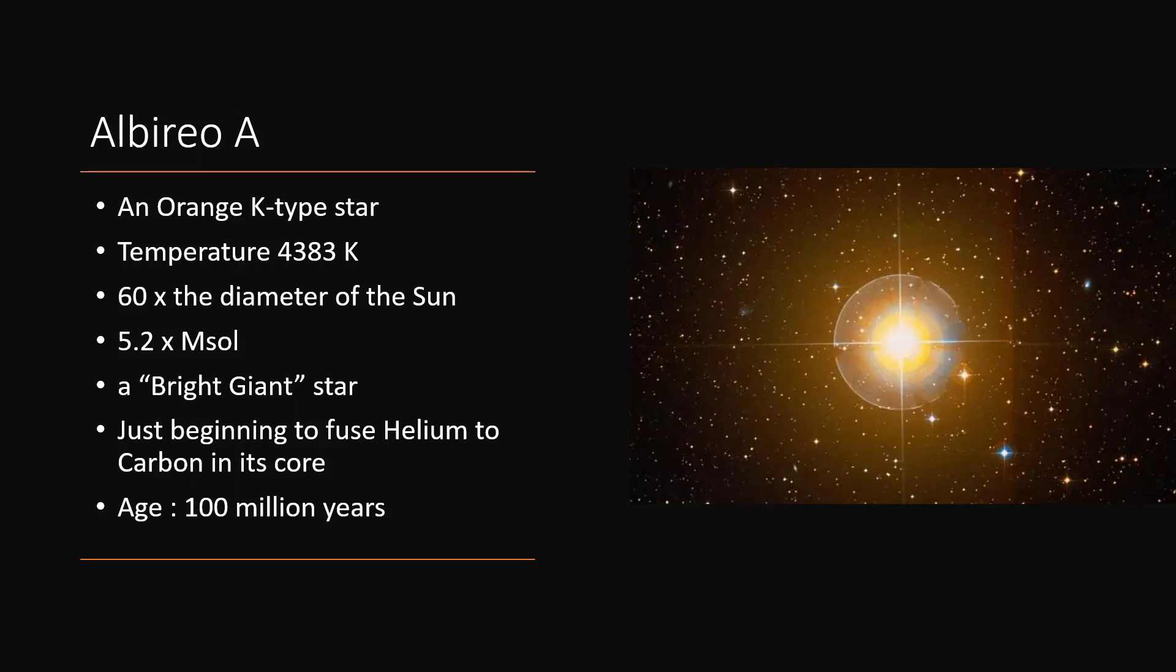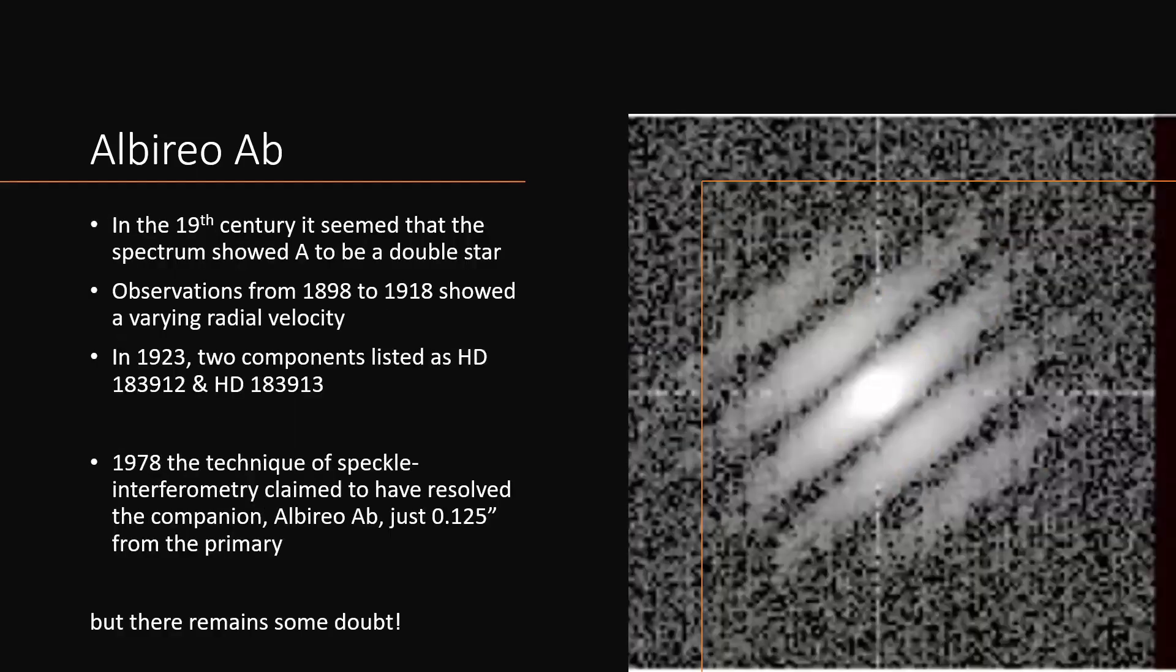Now, Albireo A also seems to have some companions. And the first attempt at proving that it was a double star came from the fact that the spectrum of light seemed to show evidence that it was moving backwards and forwards, changing its radial velocity, and therefore probably in orbit around a nearby companion. And I don't mean Albireo B, I mean something much closer. And these observations were made back in the 19th century through to the early part of the 20th century, when it was listed in the Henry Draper catalogue with two separate catalogue numbers, 183912 and 913 for the A star and its little companion, as yet unseen, but detected nevertheless.